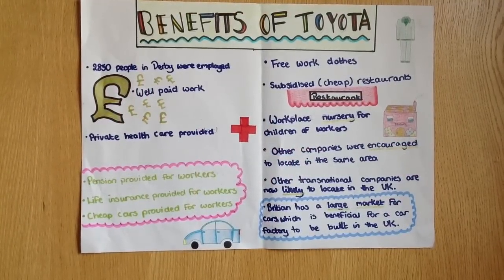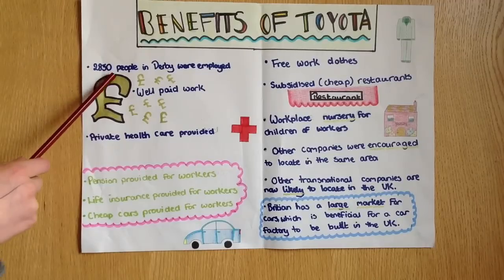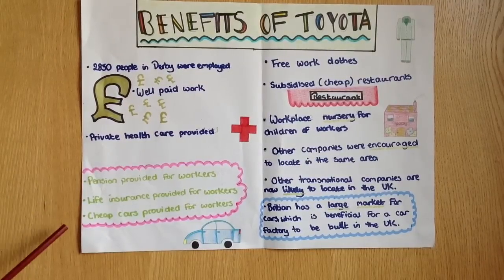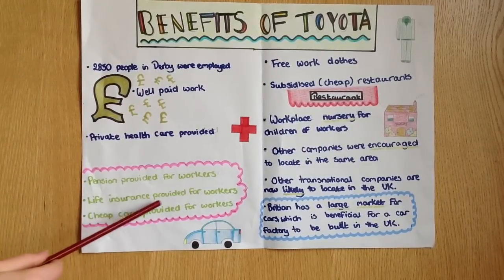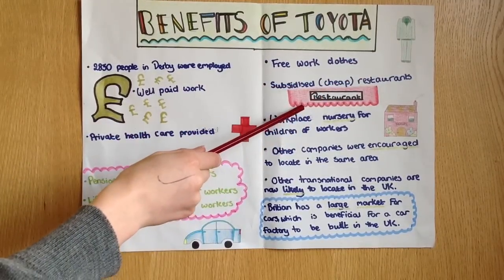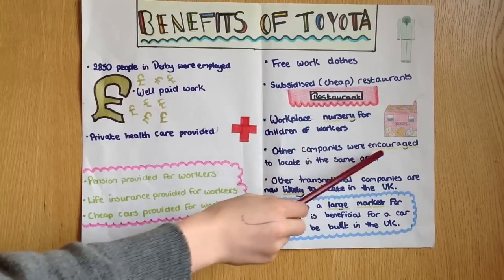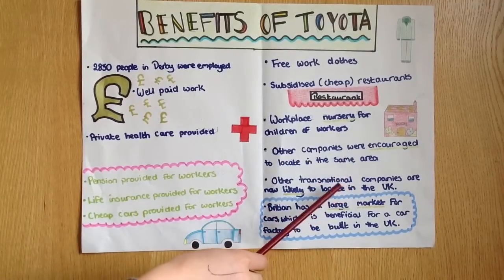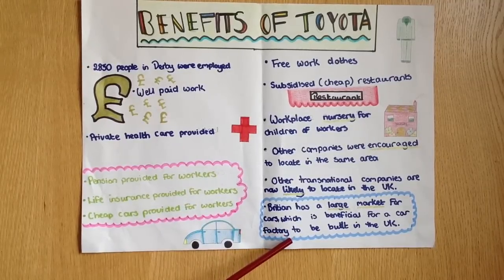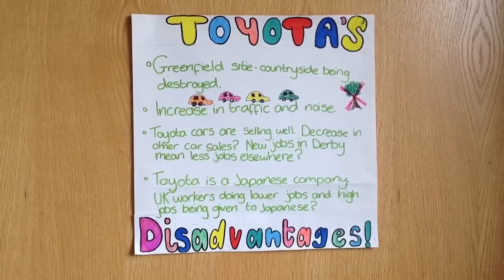So Toyota located their factory in Burnaston in the UK. What benefits did it bring to the area? 2,850 people in Derby were employed. There was well paid work and private healthcare provided. A pension was provided for workers, life insurance provided for workers, and cheap cars provided for workers. They were given free work clothes and had accessibility to subsidised restaurants. There was a workplace nursery for children of workers, and other companies were encouraged to locate in the same area. Other transnational companies are now likely to locate in the UK. Britain has a large market for cars, which is beneficial for a car factory to be built in the UK.